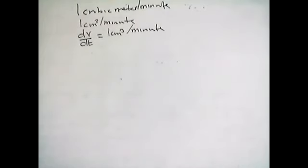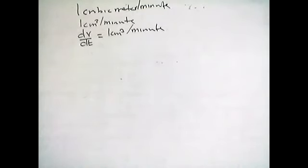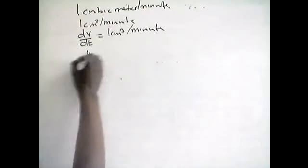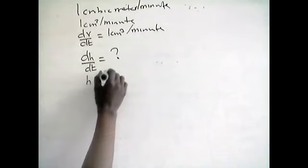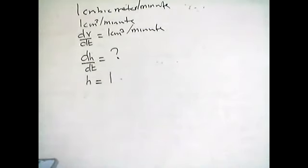From the question, we've been given the change in volume over change in time: dV/dT equals one cubic meter per minute. They ask how fast the water level is rising — that's dH/dT — when the water level is one meter deep. The trough length is five meters.